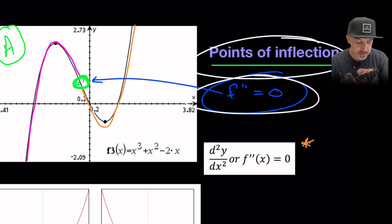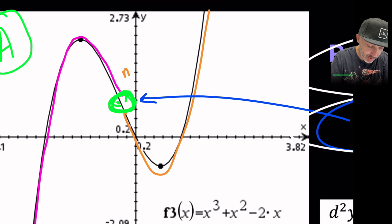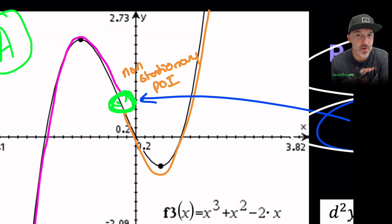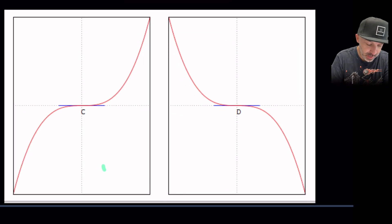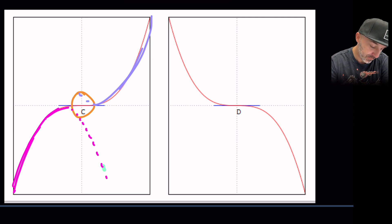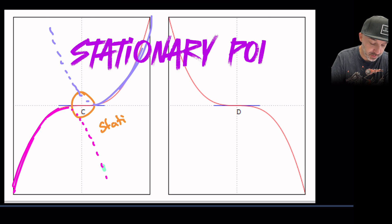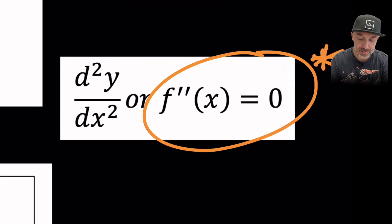Neither concave up nor concave down — the second derivative equals zero. This is a non-stationary point of inflection, where the gradient is not equal to zero. However, it can also be stationary. Points C and D shown here are both stationary points of inflection — where concave down meets concave up — but the gradient is also zero at those points. Both stationary and non-stationary points of inflection share the condition that the second derivative equals zero.